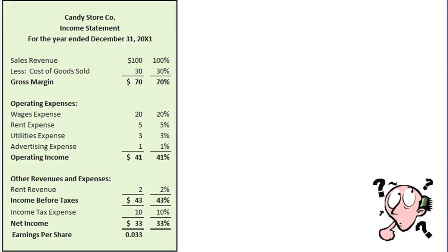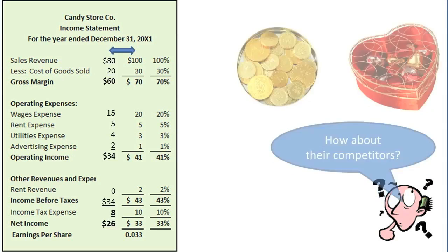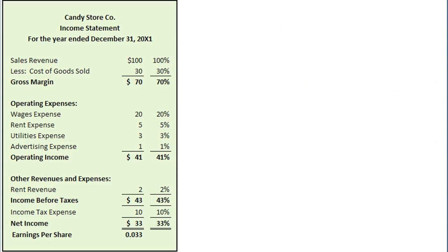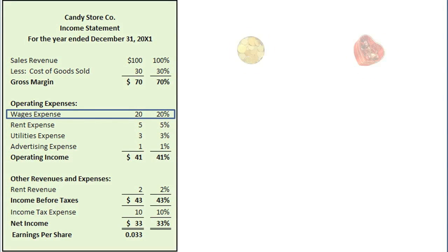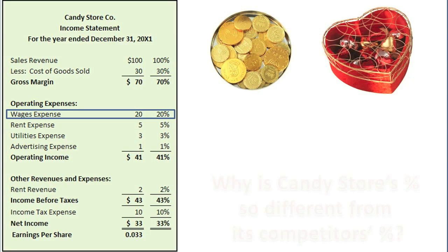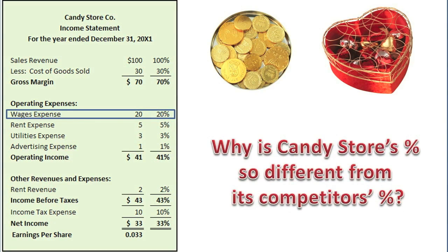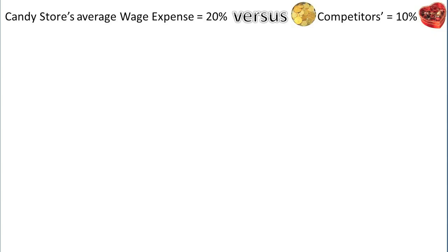In addition to comparing Candy Store's revenues and expenses to itself in the prior year, analysts will also want to compare Candy Store's current year numbers to those of its competitors. Let's look at one of Candy Store's percentages in detail, such as its wages expense of 20% of sales revenue. An analyst would not only want to compare this percentage to Candy Store's percentage from prior years — which would have been about 18.75% — but also to Candy Store's competitors in the current year, and strive to find out what may have caused its percentage to be higher, lower, or even the same. For example, what do you think some logical explanations could be if the average wages expense percentage for other companies in the same industry was only 10% of sales revenue? And what would you, as management, do about it? Remember, the formula is wages expense divided by sales revenue.